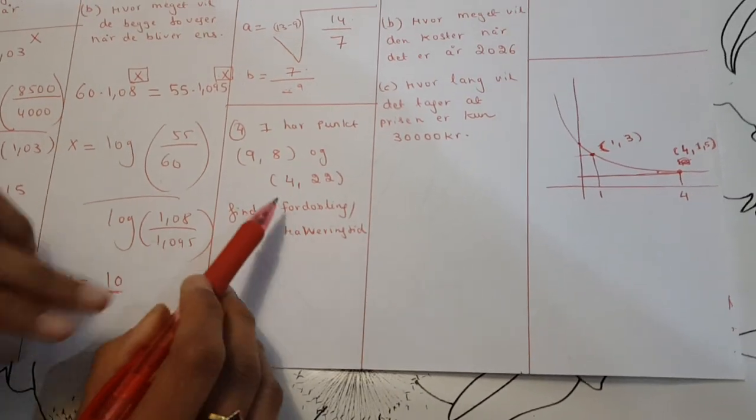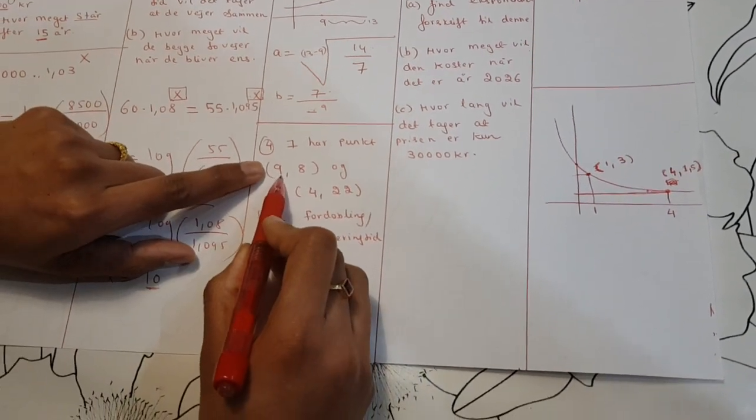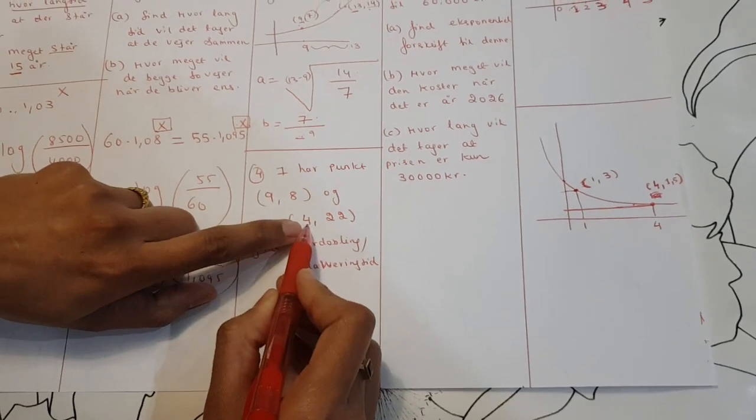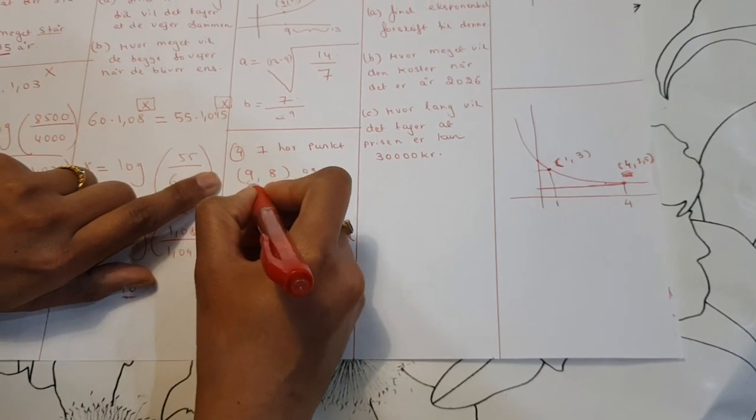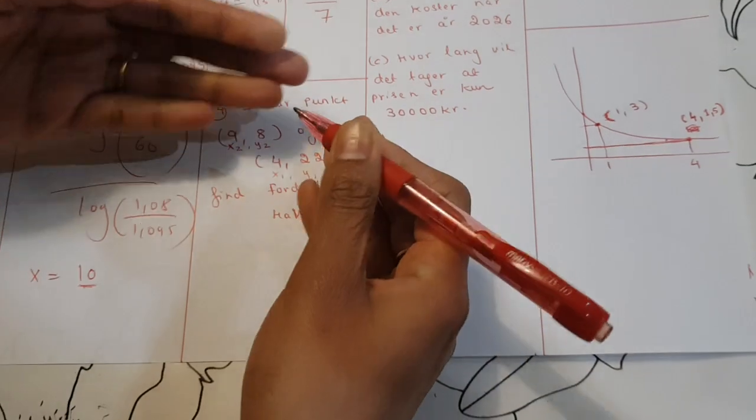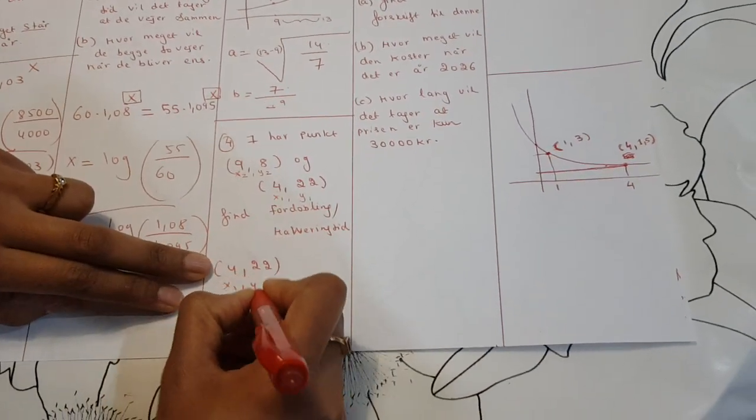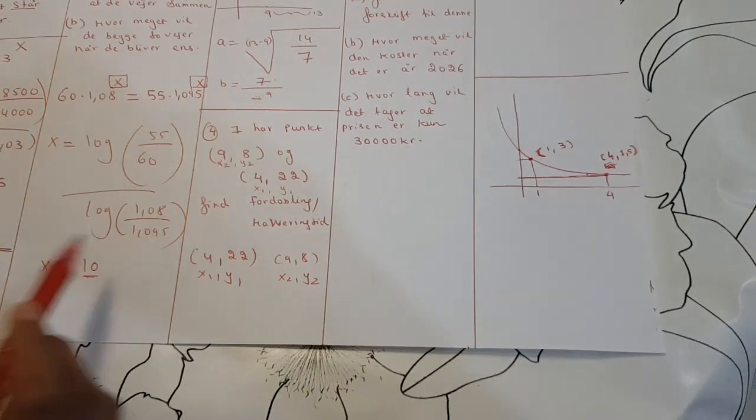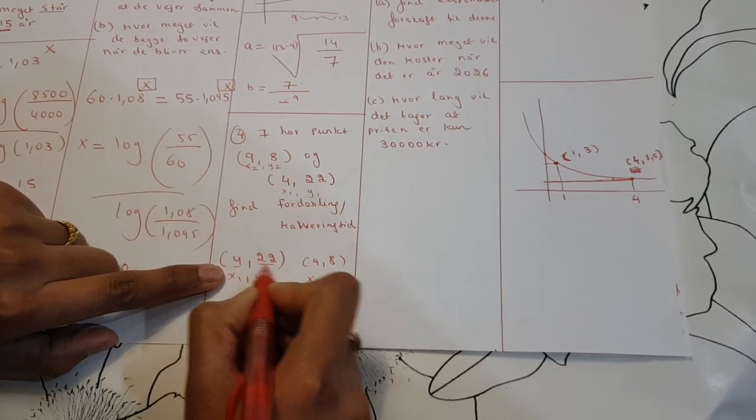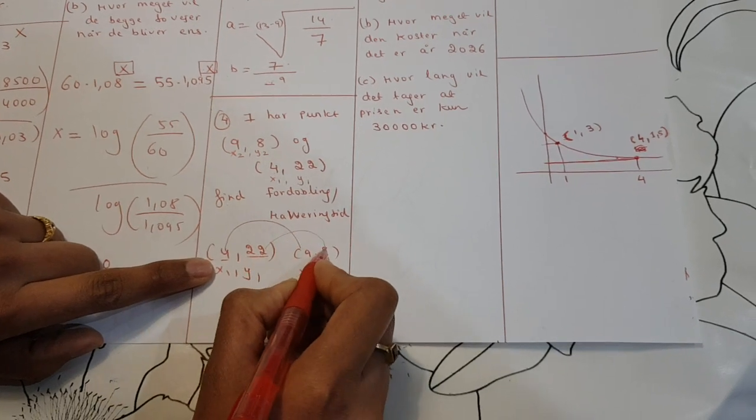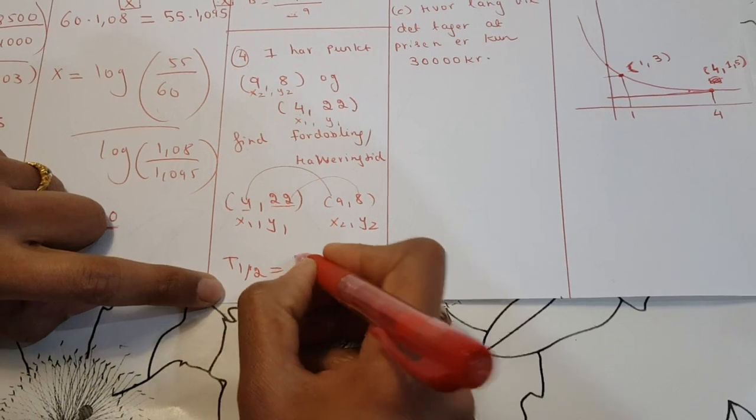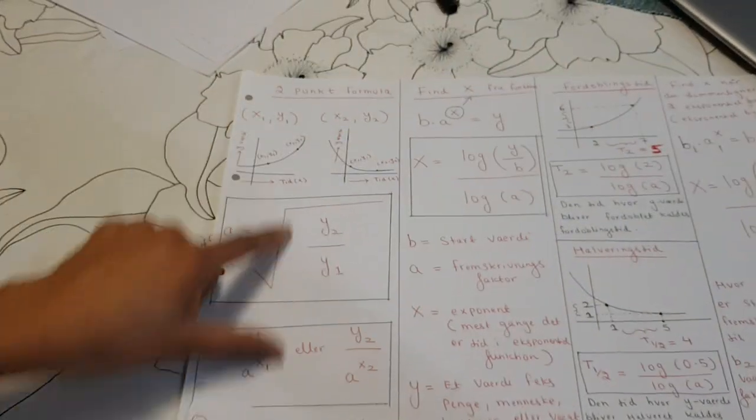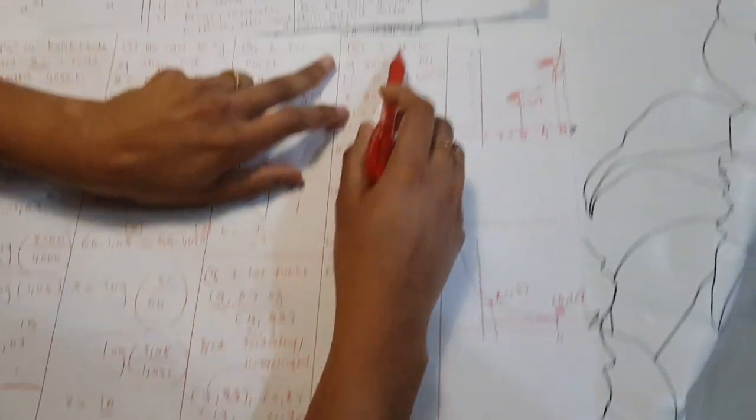Now I look at problem number four. You have point nine and four. Find the halving time. First thing is, I look at the points correctly. Which point is x1, y1, and which point is x2, y2? Which one comes first? Four comes first or nine first? So four comes first. So this is x1, and this is y1. This is x2, and this is y2. So be careful. Write it correctly: four is x1, y1, and nine is y2. And the question is about doubling or halving. I won't say which, you have to find it yourself. How can I find it? When I was at four, the value was 22, and when I went by, it became half. So the question is about halving time. So I'll use the formula log of half divided by log of a, where a you find from the two-point formula.